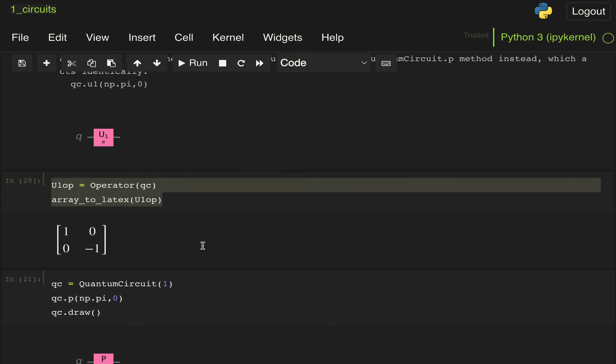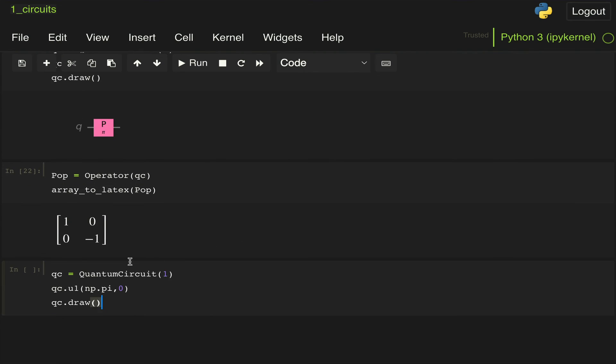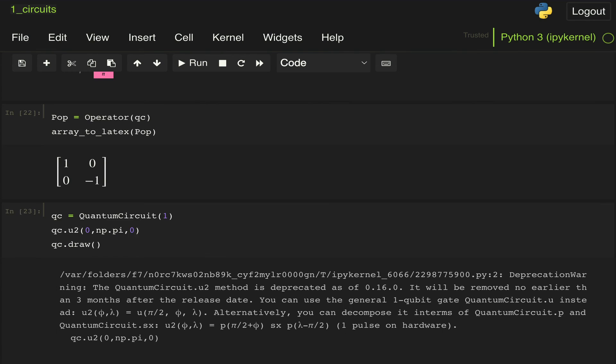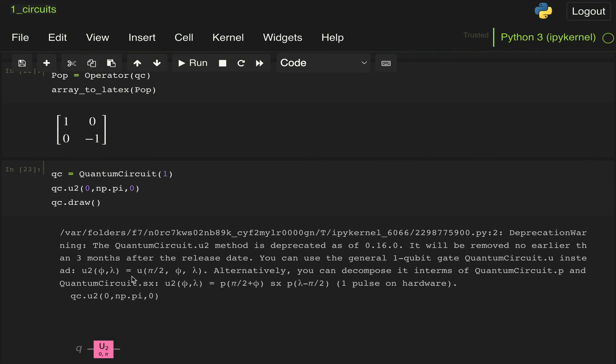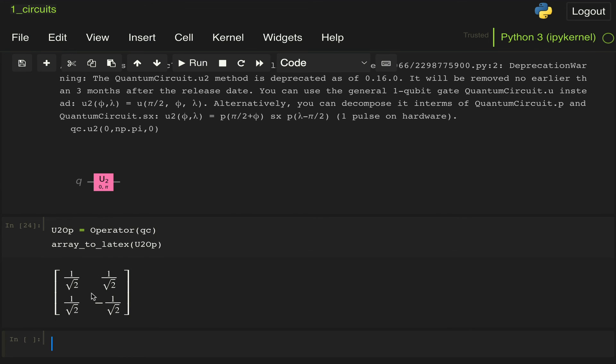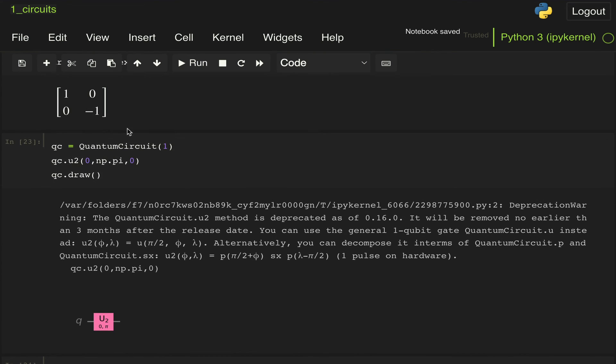We can do the same thing for the other ones. We can redefine our quantum circuit. We're going to specify U2 gate with 0 and pi. We get again a warning that this has been deprecated, and here it gives us some option of how to replace it. So instead of using a U2 gate, they're telling us to use a U gate with this value of theta as we derived before. Then we can do a U2 operator equal to operator of our quantum circuit, and let's print that, and here we see that it looks like a Hadamard gate.